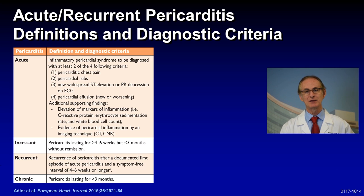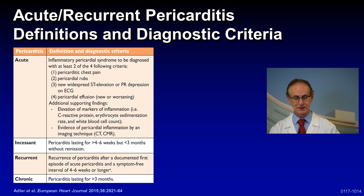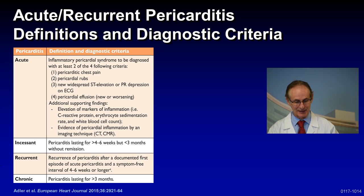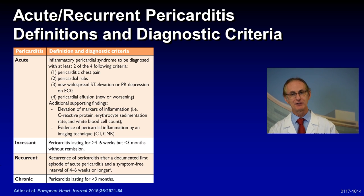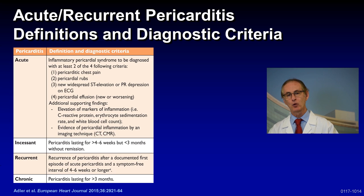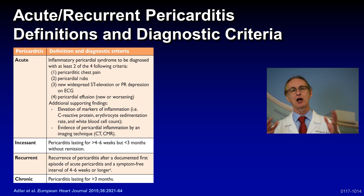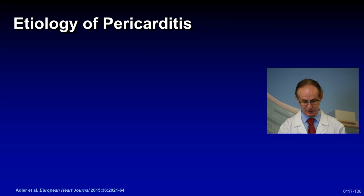Now let's define some newer terms. Incessant pericarditis means the pericarditis is continuous — it lasts more than four to six weeks but less than three months without remission. The classic definition of recurrent means you have a first episode, then a symptom-free break of four to six weeks or longer — that's what we call recurrent. Chronic means it lasts more than three months. There is a lot of overlap with these definitions, but this is how we look at these patients.